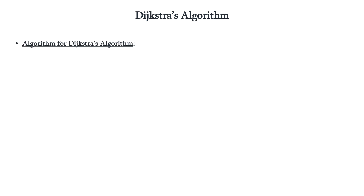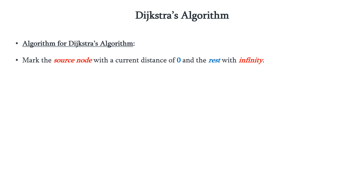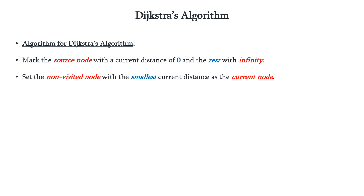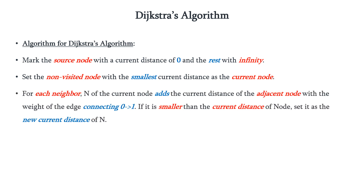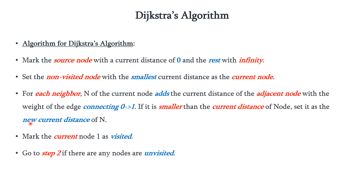Let us see the algorithm steps. First, mark the source node with a current distance of 0 and all others with infinity. Then set the unvisited node with the smallest current distance as the current node. For each neighbor n of the current node, add the current distance of the adjacent node with the weight of the connecting edge; if it is smaller than the current distance of node n, set it as the new current distance of n. Mark the current node as visited, and go back to step 2 if there are any unvisited nodes. Repeat until all nodes have been visited.